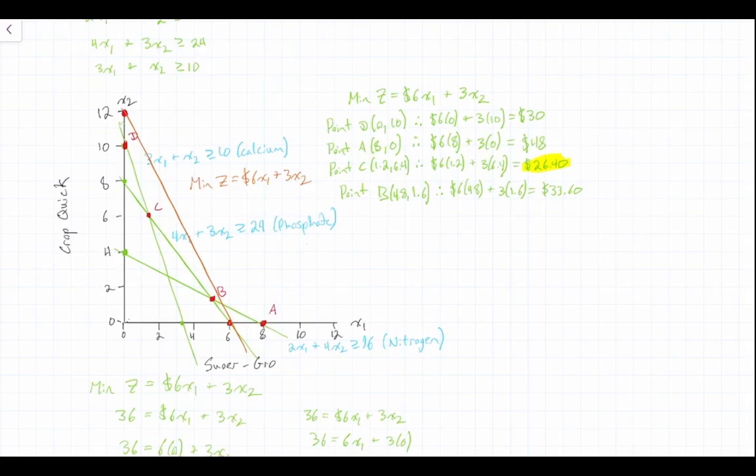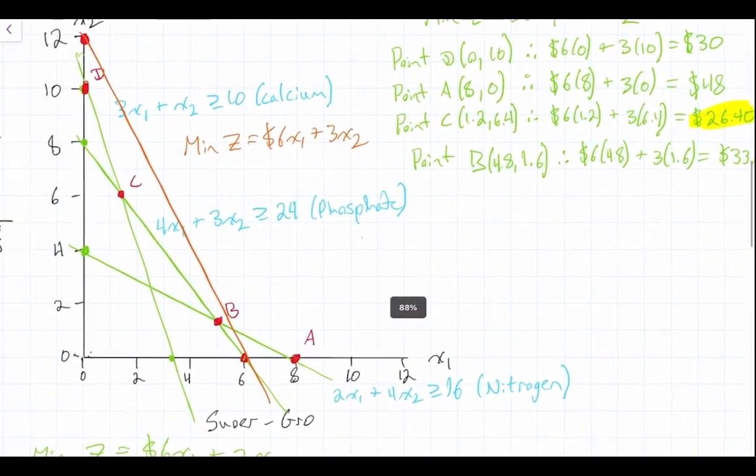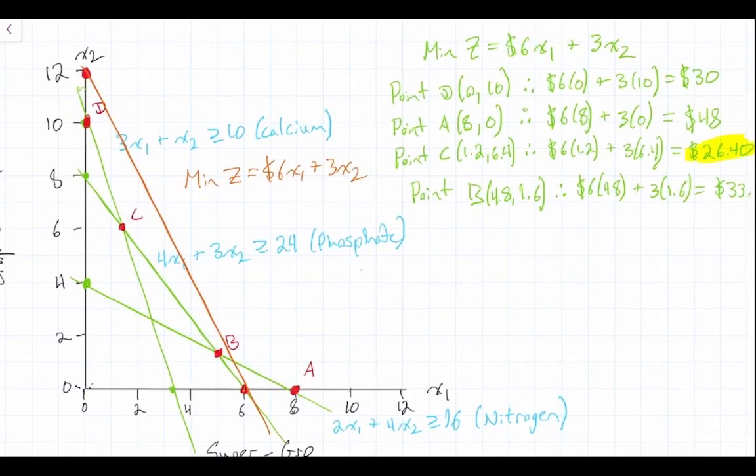Because this is a minimization problem, we are going to move our objective line towards the origin, meaning towards point 0,0. And what we're looking for is the point within the feasibility region. And we covered this in a previous video, but the feasibility region is to the right of this shaded region. We're looking to the point where it is the last point within the feasibility region where this objective function line touches.